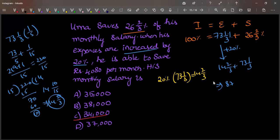Okay, 73 plus 14 is 87, and 2/3 plus 1/3 is 1, which means 88.